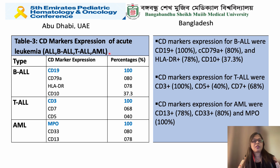This table shows CD marker expression of acute leukemia. B-ALL expressed CD19 in 100% of cases, T-ALL expressed CD3, and AML was MPO positive. The next most common positive markers were CD79a, CD7, and CD33 respectively.